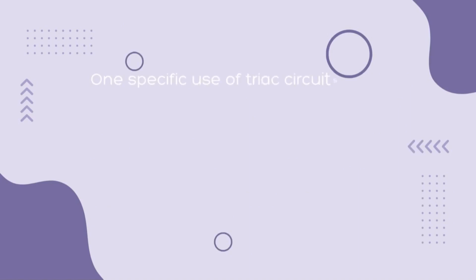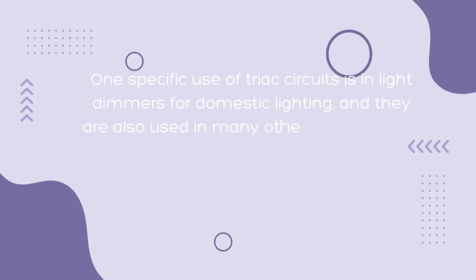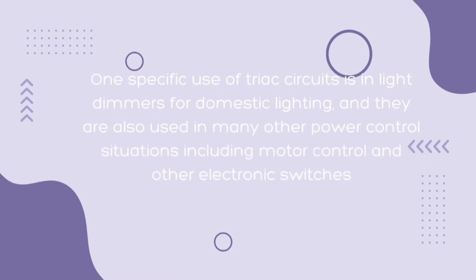One specific use of TRIAC circuits is in light dimmers for domestic lighting, and they are also used in many other power control situations including motor control and other electronic switches.